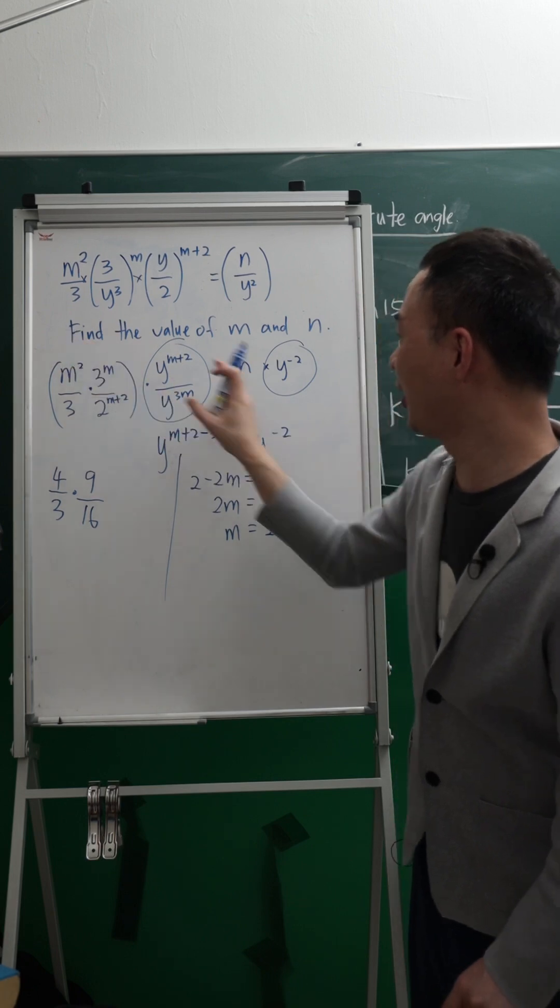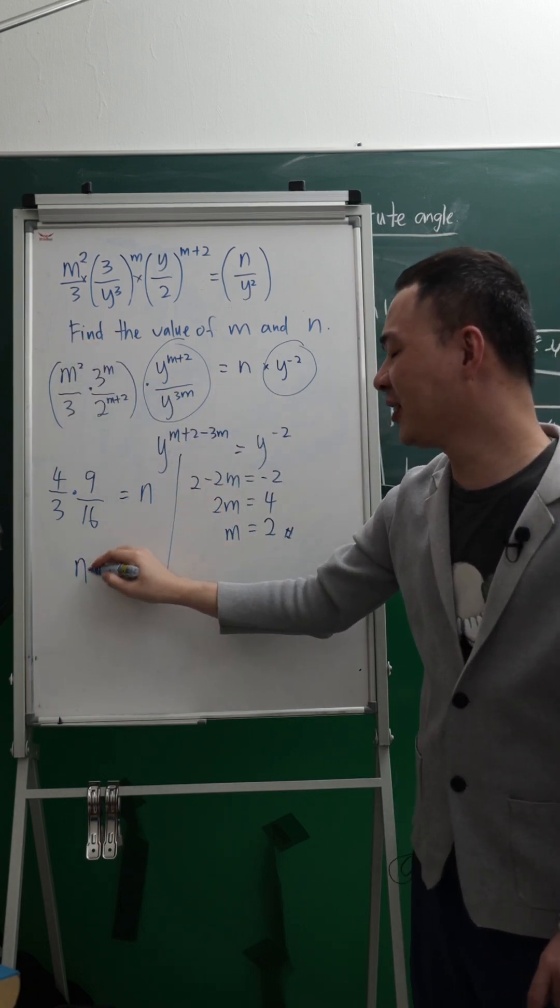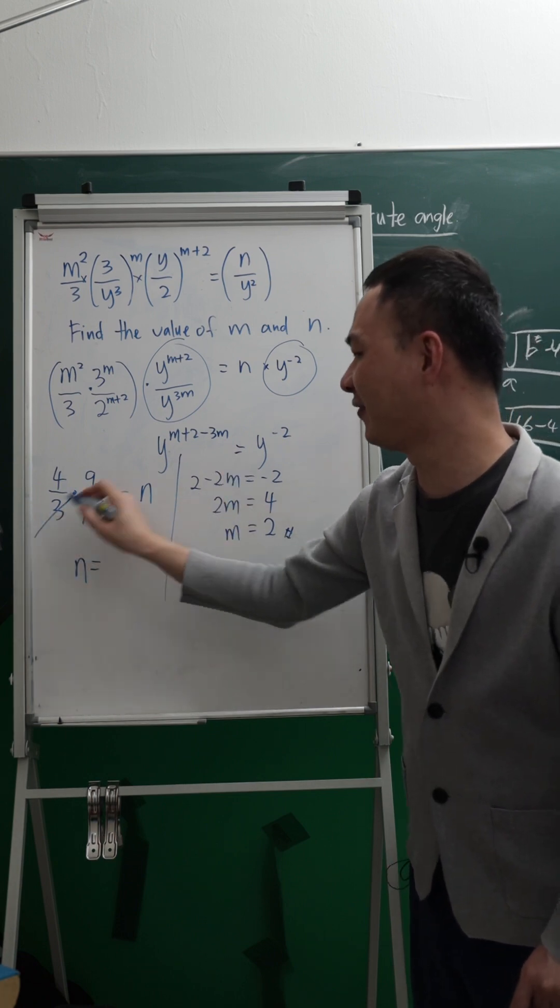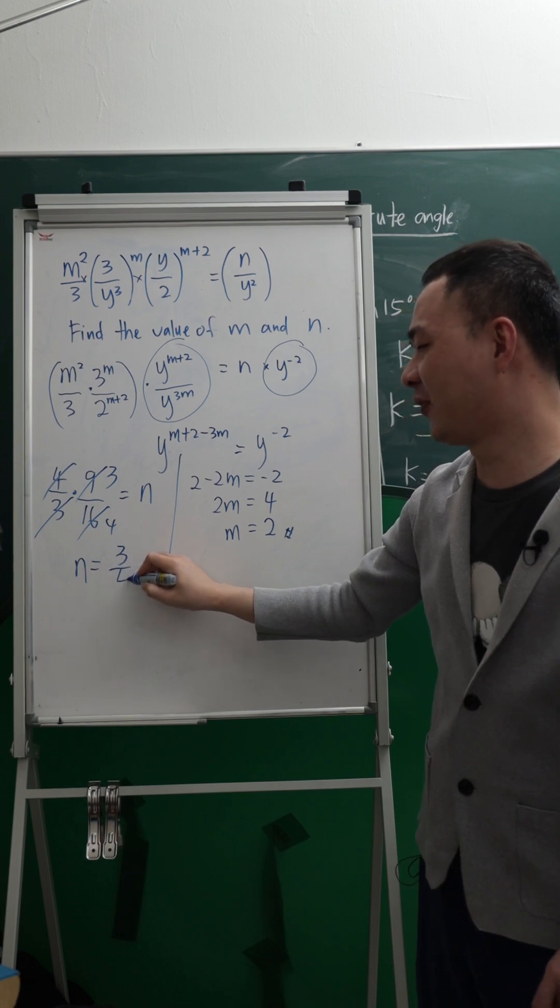The whole thing will equal to N. Then by solving this one, I should be able to get my N value. This is 3, this is 4. So my N is 3 over 4.